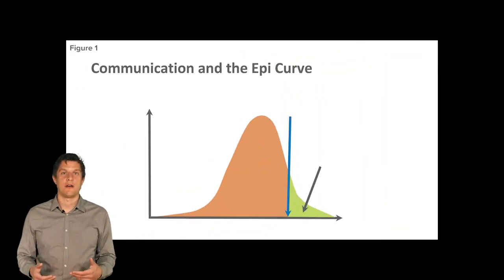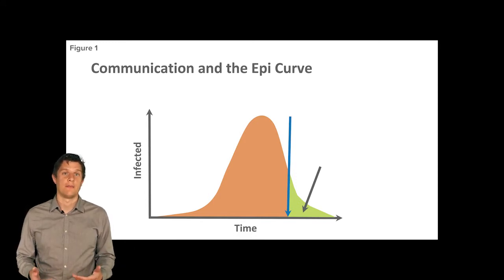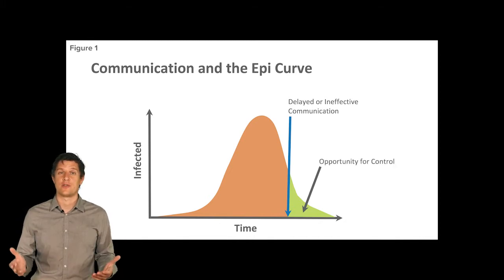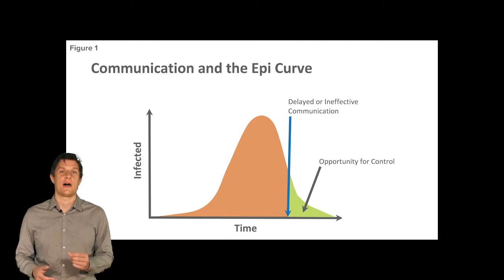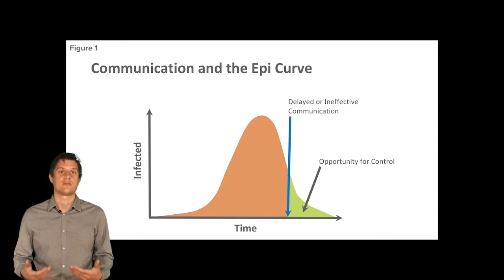Figure 1 is a simple diagram of an infectious disease outbreak with cases mapped on the vertical axis and time on the horizontal axis. The curve shows the increase and decline of cases over time. As the diagram shows, delayed or ineffective communication delays the opportunity for control and prevention. As a result, there is an increase in the overall number of people vulnerable to infection. In the case of COVID-19 vaccination communication, each day that goes by without persuading people to get vaccinated increases the risk that the virus will continue to spread and infect others, including vulnerable populations.